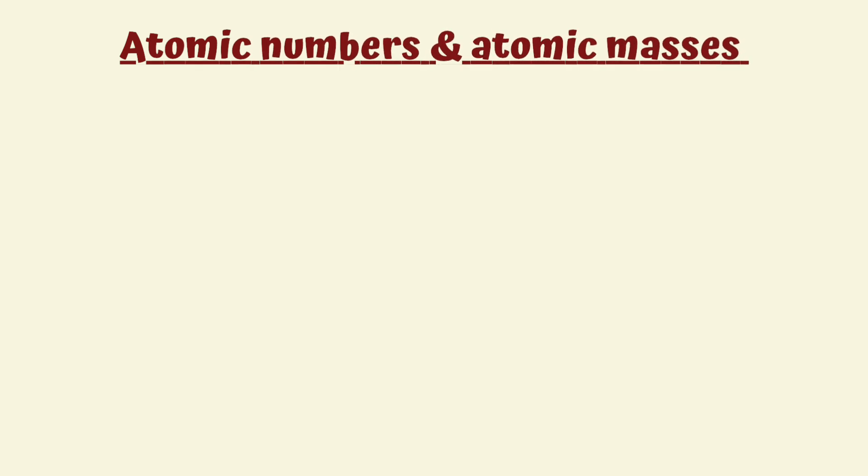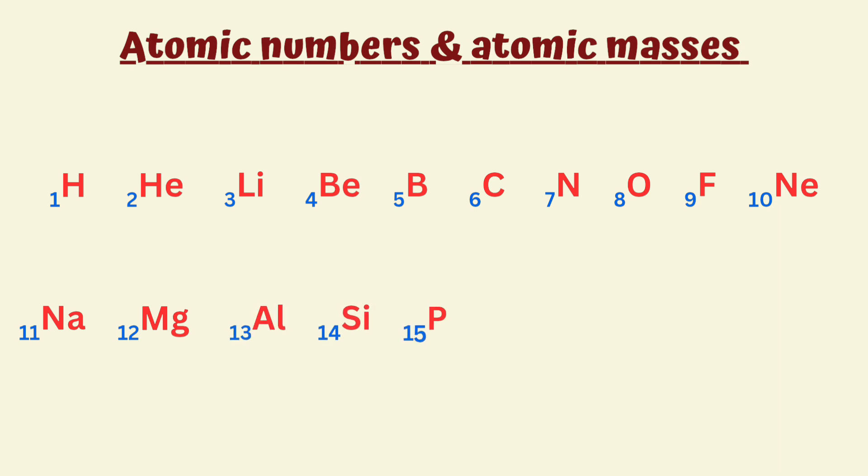To learn atomic numbers and atomic masses of the first 20 elements, write the first 20 elements of the periodic table with numbering using the previous trick. Then, each number is its atomic number.